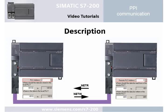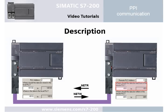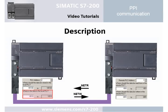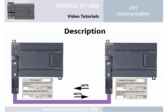The respective communication partner is identified via the address. Using the NetR function enables reading a data area from a remote PLC and storing it in a selected data area of the local PLC. Using the NetW function enables writing a data area from the local PLC into a selected data area of a remote PLC. This enables communicating with up to 24 PLCs via the instruction wizard for NetR and NetW.